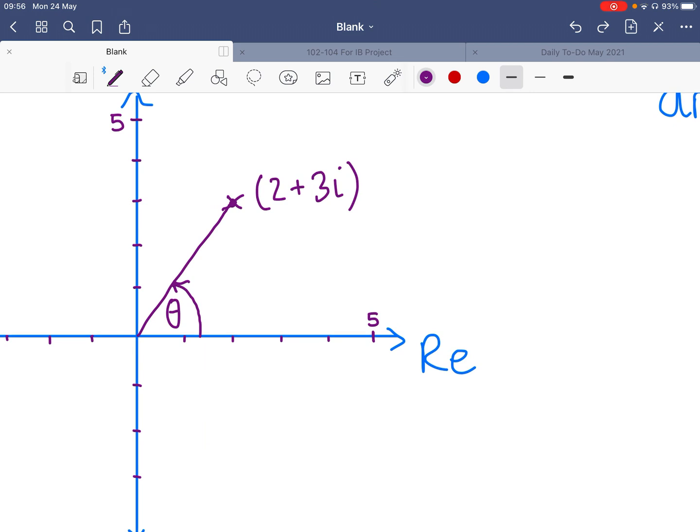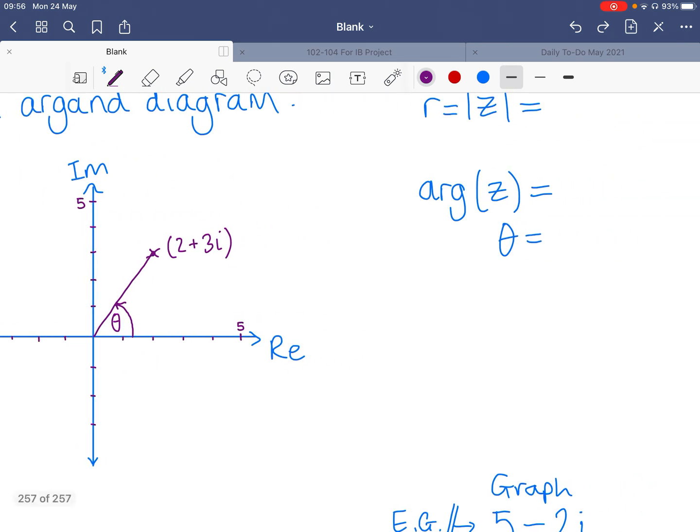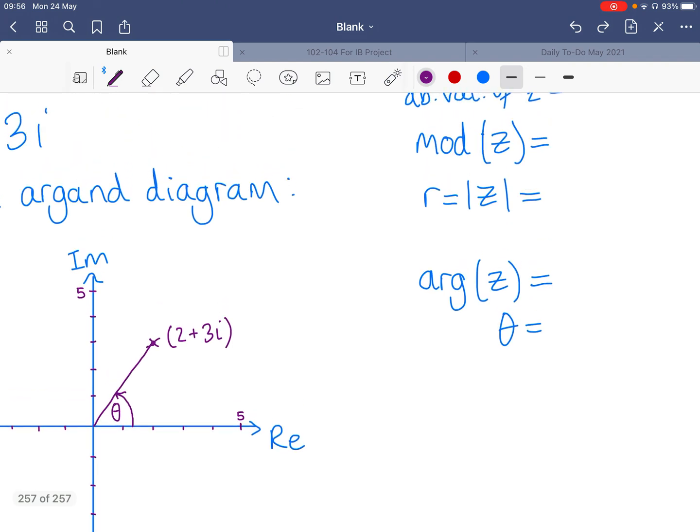So well, how would we find those things? And what are they called? What are the notations for those?